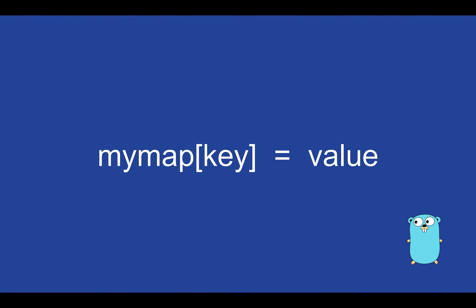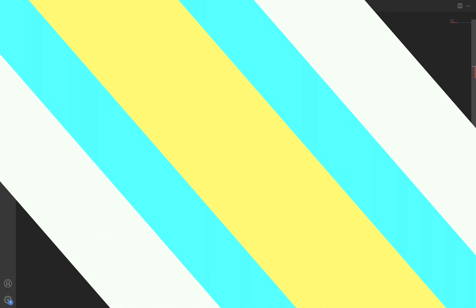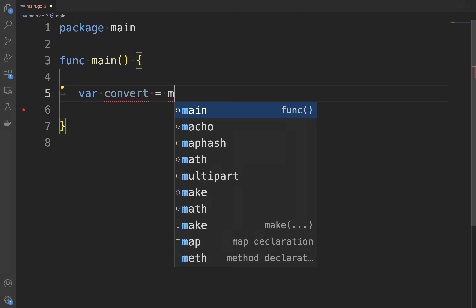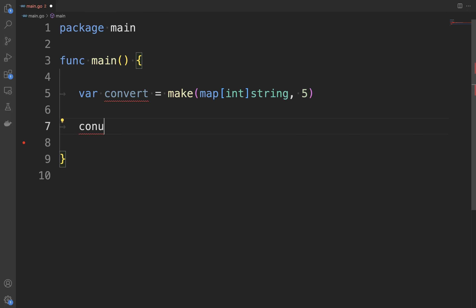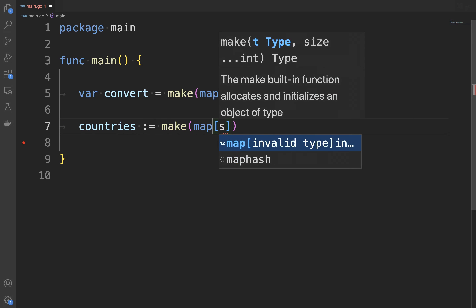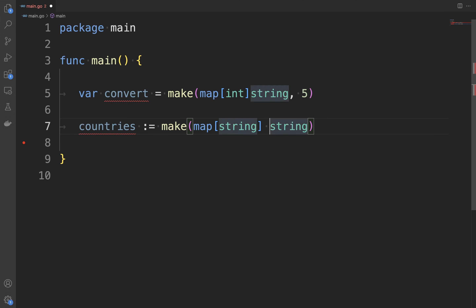To add key-value pairs to a map in Go it's very simple. You just need to use the syntax: myMap[key] = value. What happens if you try to add an existing key to a map in Go? It will override or update the value of that key with the new value. Let's write an example. I'm going to define the first map 'convert' with make(map[int]string, 5), and then 'countries' using make(map[string]string) without a capacity.